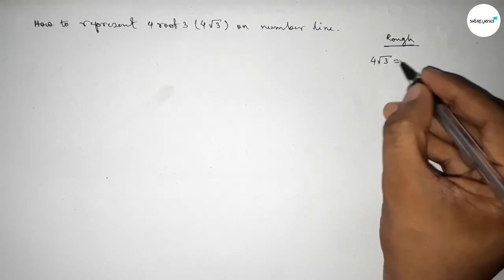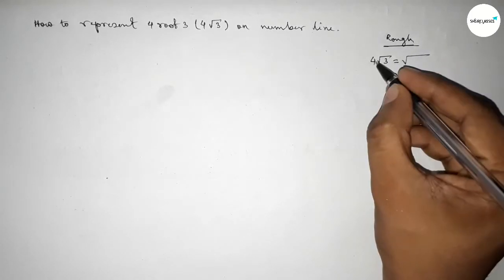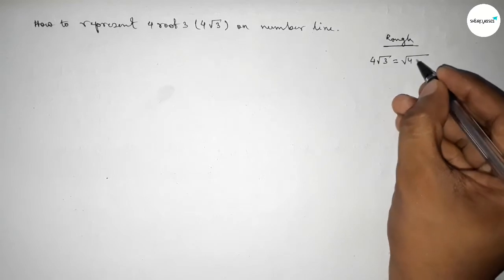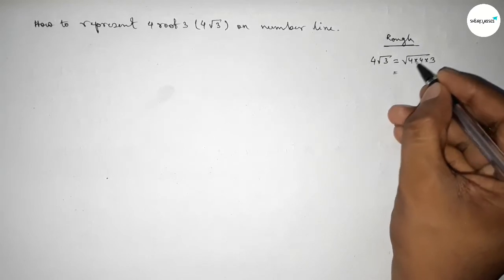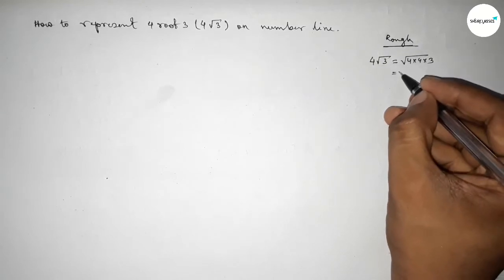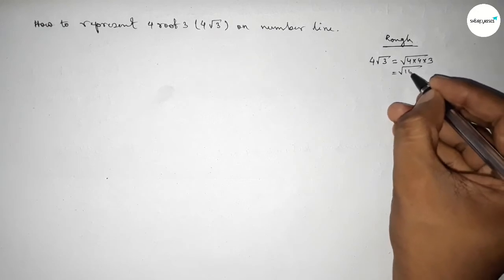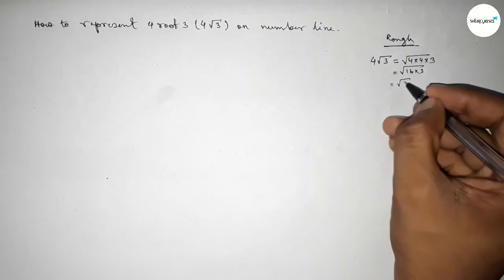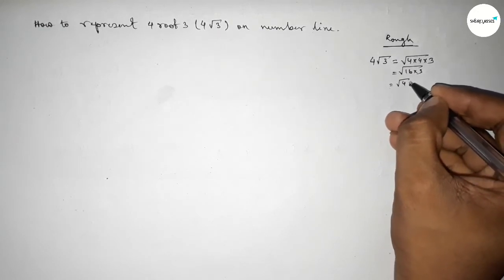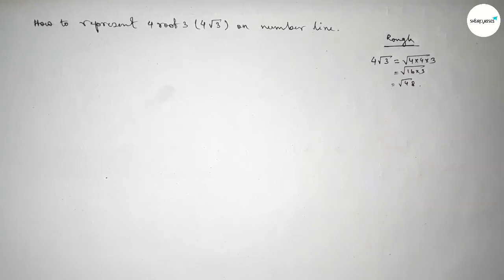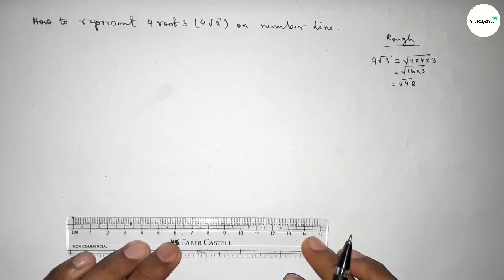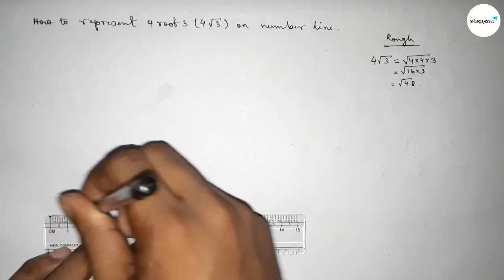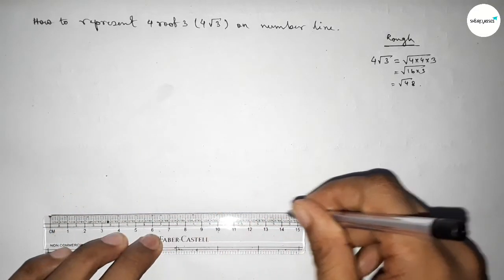We can write this as √(4 × 4 × 3), so this is √(16 × 3), which equals √48. So first we have to draw a number line.